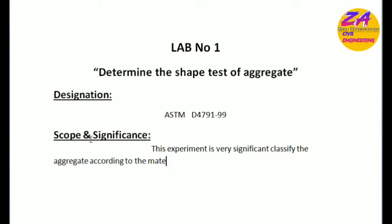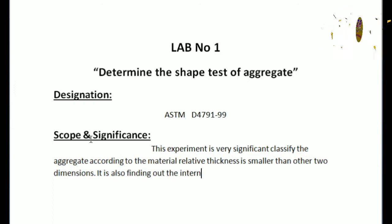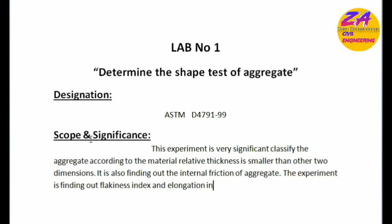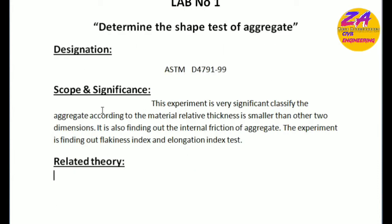It classifies the aggregate according to the material relative thickness that is smaller than other two dimensions. It also finds out the internal friction of aggregate. The experiment is finding out flakiness index and elongation index test. So basically this is scope and significance of this experiment.